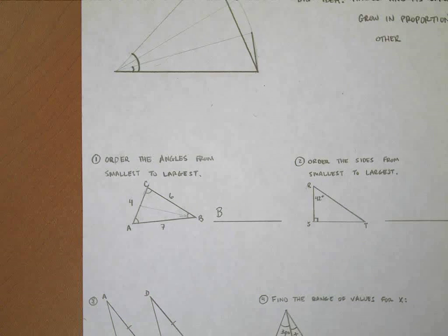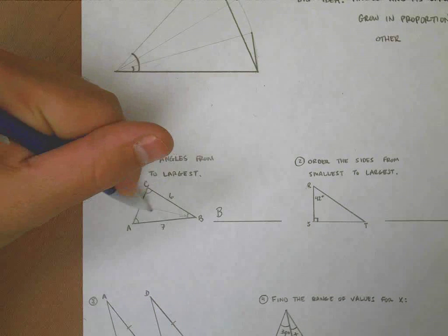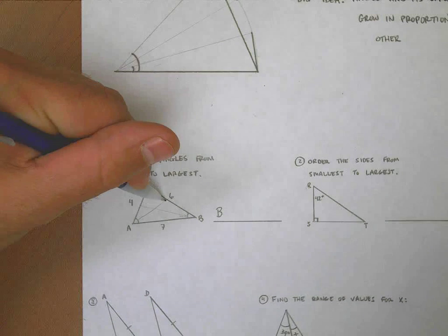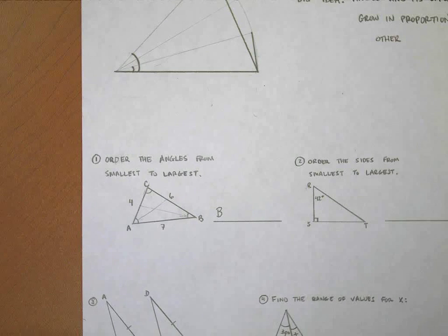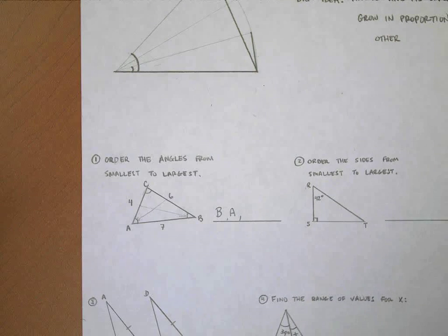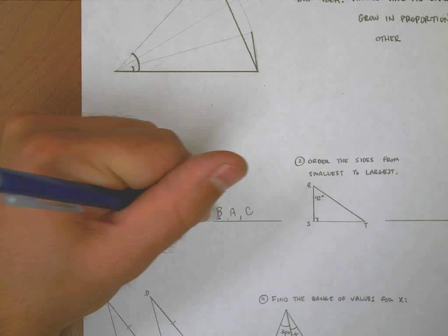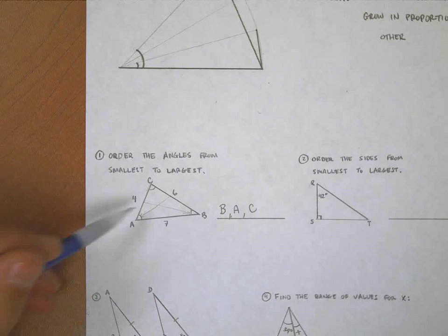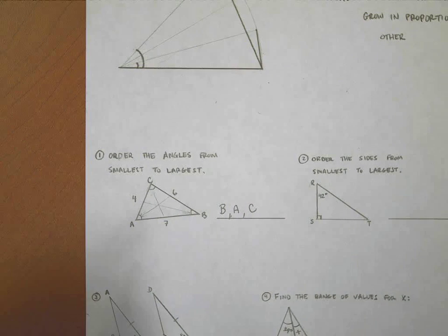6 is the next smallest side, and it is across from A. So I know that A is going to be the second smallest angle. That leaves C to be the largest angle because it's across from the largest side.